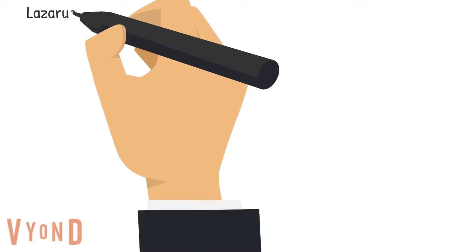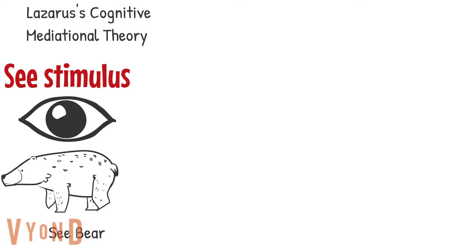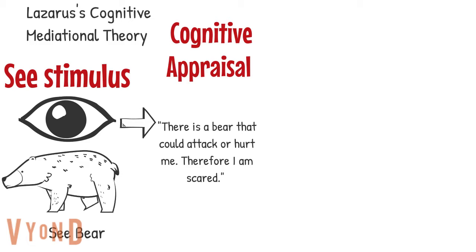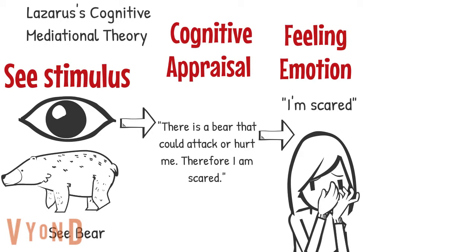The Lazarus cognitive mediational theory argues that you first see the stimulus — in your case, that would be seeing a bear at your campsite. Then you have a cognitive appraisal of the situation and understand why it may cause a particular emotion. In your case, you might think: there's a bear that could attack or hurt me, therefore I'm scared. Then, because you appraise the situation, you feel the emotion. Because you recognize that the bear is present and is a threat to you, you experience the emotion of fear.